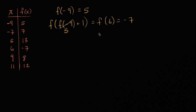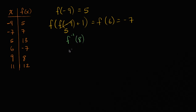So all of that is a review so far, but what I want to now do is start evaluating the inverse of functions. This function f is invertible because it's a one-to-one mapping between the x's and the f of x's. No two x's map to the same f of x, and so this is an invertible function. With that in mind, let's see if we can evaluate something like f inverse of eight.